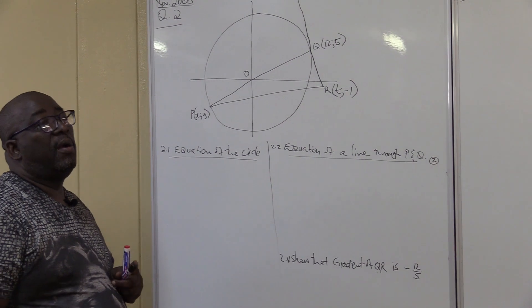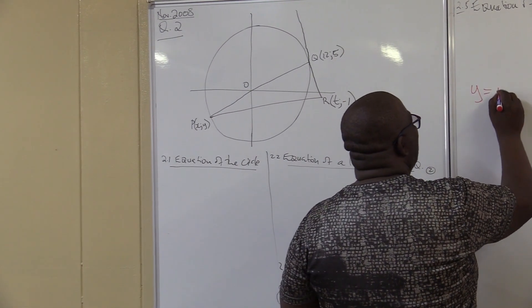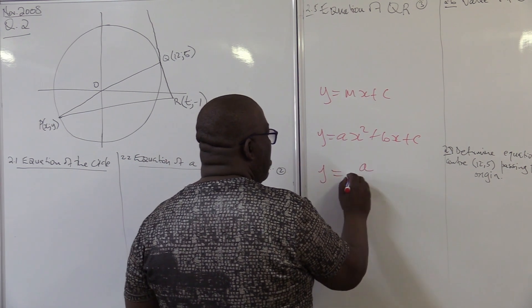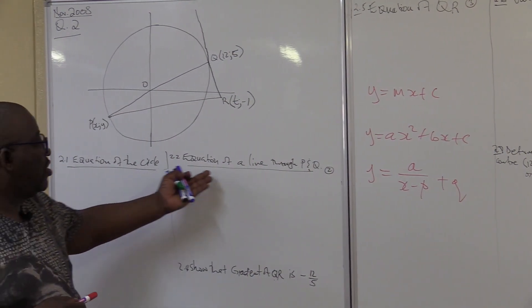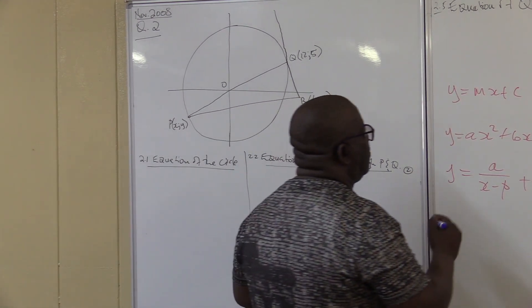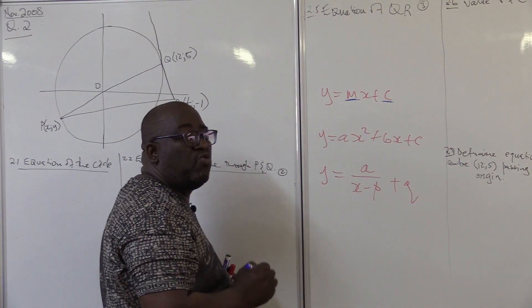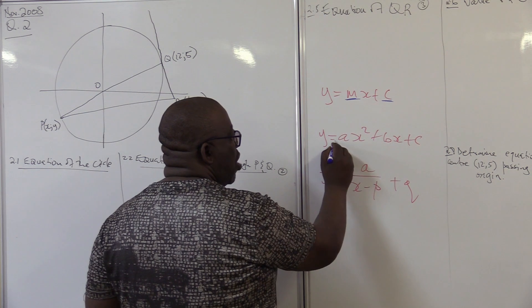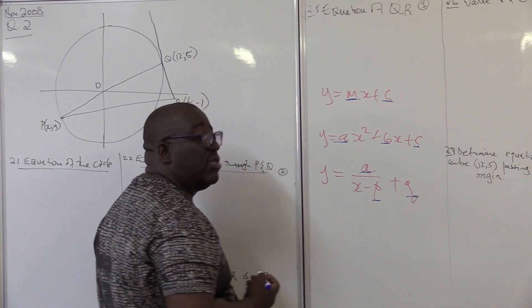In mathematics, you'll always find questions that say 'find the equation.' It might be any graph — y = mx + c, y = ax² + bx + c, or y = a/(x − p) + q. When you're looking for the equation of a straight line, you're looking for m and c — you don't touch y or x. Same thing for a circle: you're looking for a, b, and r squared.